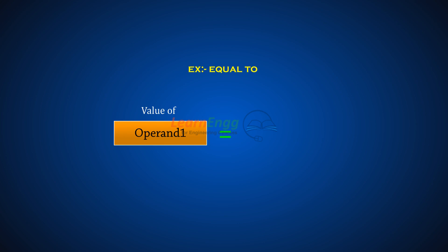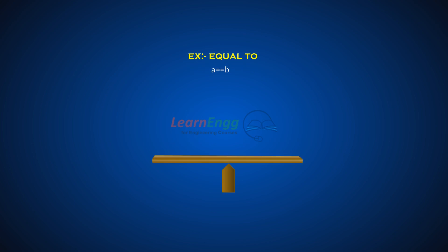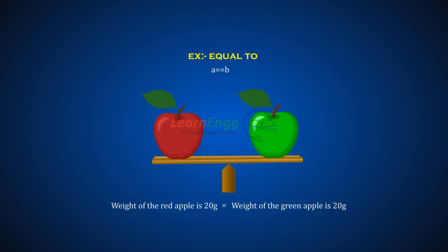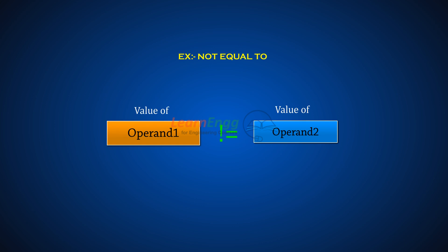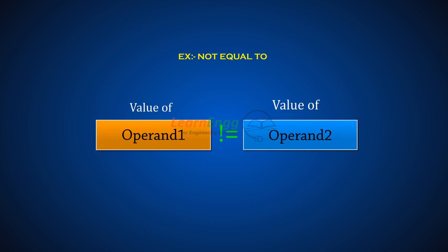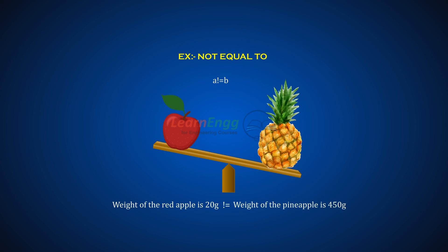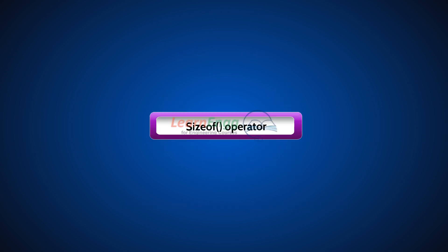The equal to operator is used to check whether both operand values are equal or not. For example, the weight of a red apple is 20 grams and a green apple also weighs 20 grams — both weights are equal. The not equal to operator is used to check whether both operand values are not equal. For example, the weight of a red apple is 20 grams but a pineapple weighs 450 grams — both weights are not equal.